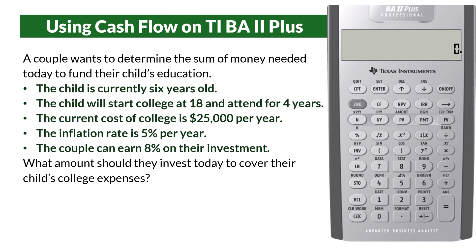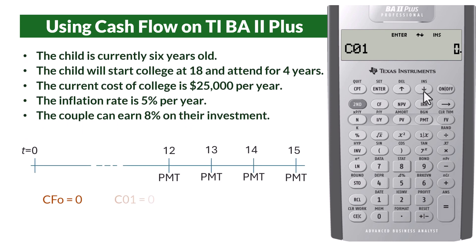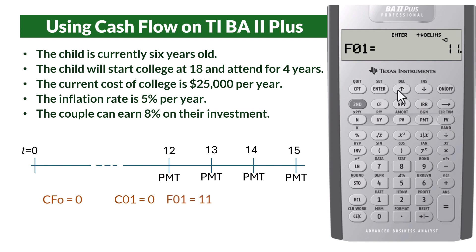Now let's see the shorter way using the cash flow worksheet on the BA2 Plus calculator. Press the CF button, then press 2nd Clear Work to clear previously done work. Leave the initial cash flow at zero and scroll down. CO1 will also be set at zero since there is no payment for the first 11 years. Scroll down.